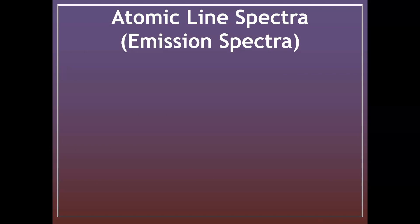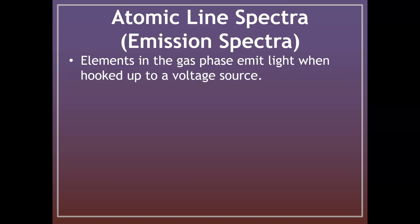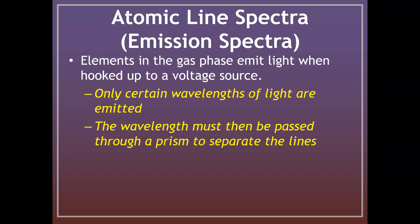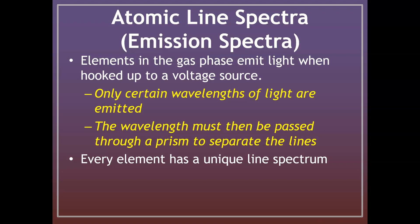What's cool about that formula is it helps predict the energy that's going to be emitted. When you take an element in the gas phase and hook it up to a voltage source, it can emit light — and only certain wavelengths of light are emitted. Those wavelengths pass through a prism to separate the lines, and those lines are always the same. Every element has a unique line spectrum — it's almost like the element's fingerprint — so you can identify elements from very far away.